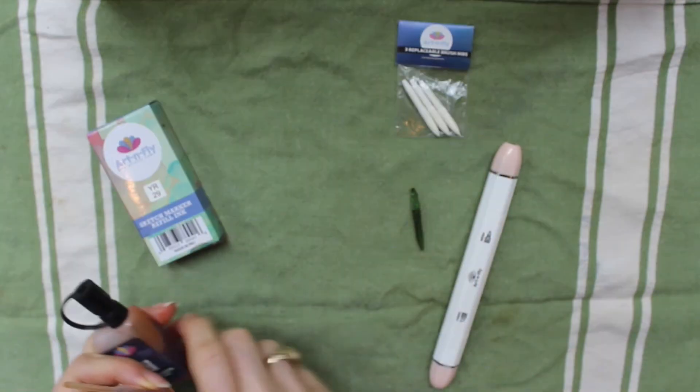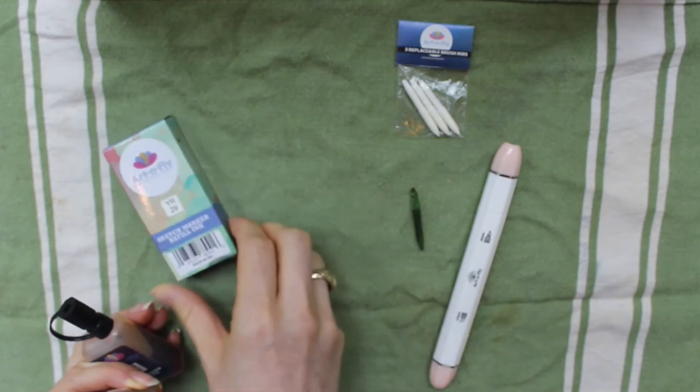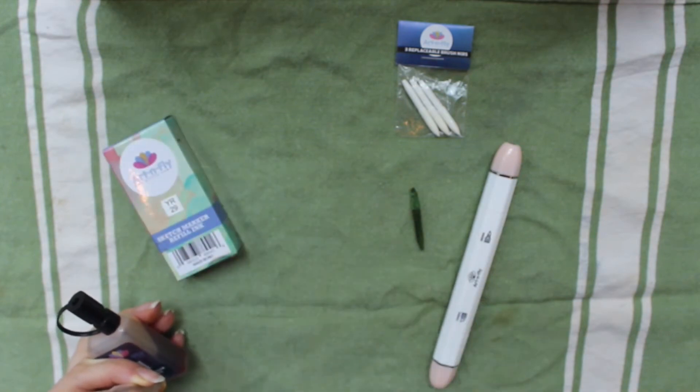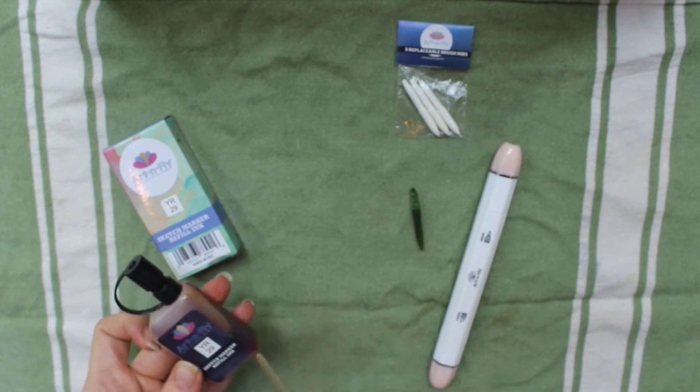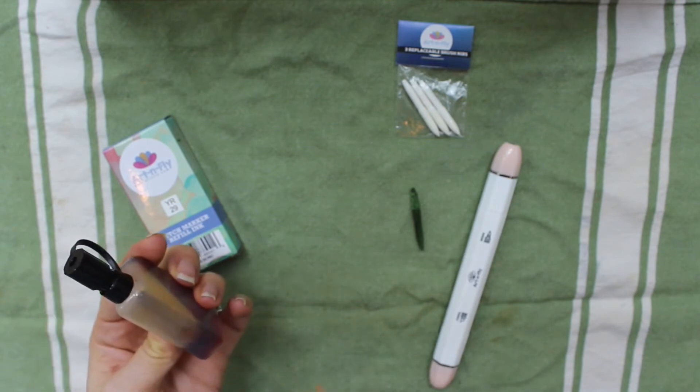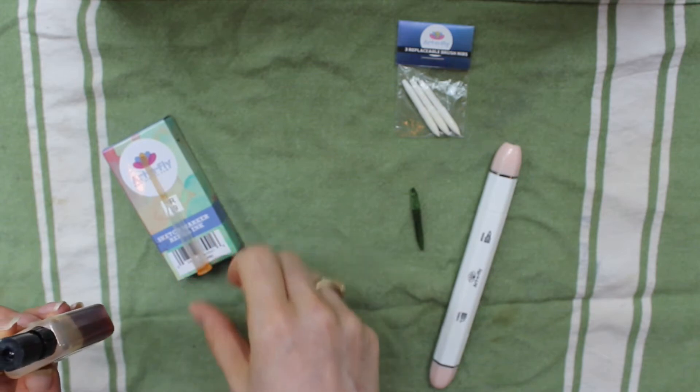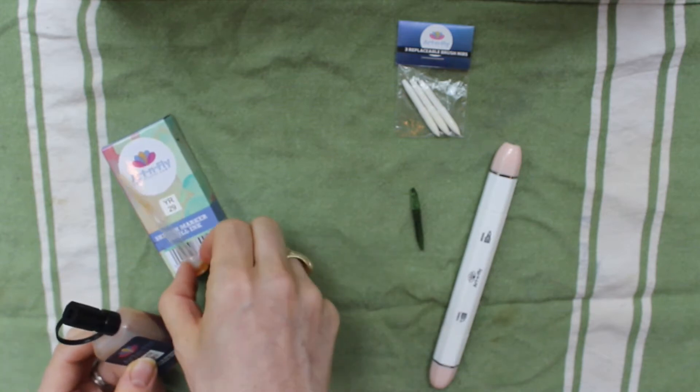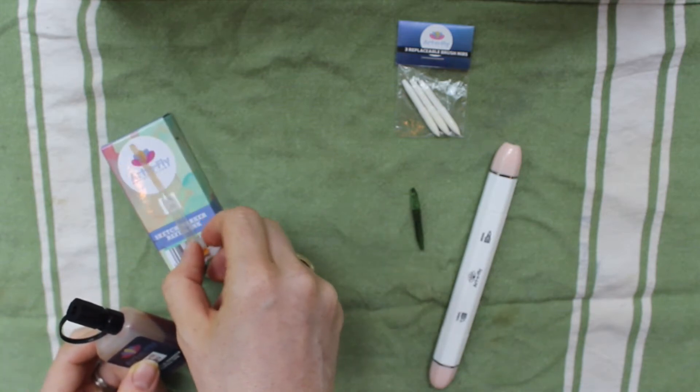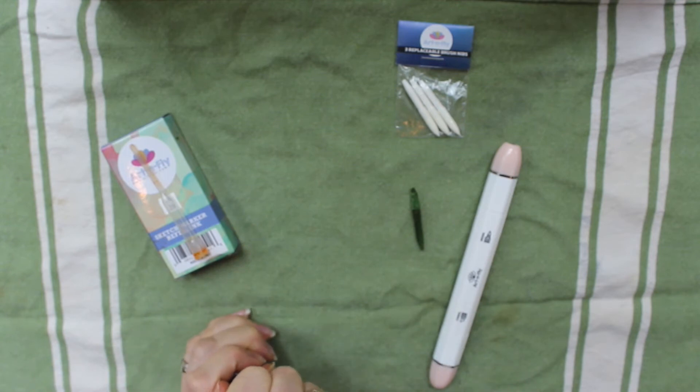So when you get one of our refills, it's going to come in a box just like this one. This is our YR29 for one of our skin tone markers. And the refill when you take it out, this one's been used quite a bit, but it's going to look like this, just a little bit more full, and it's going to come with a nozzle. And when you open it up, it's going to be closed on the top.